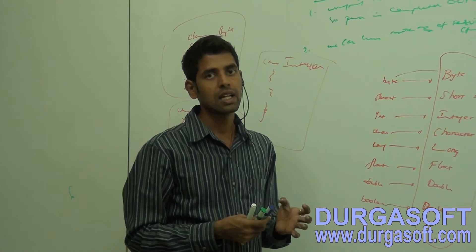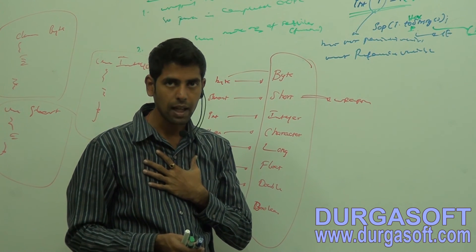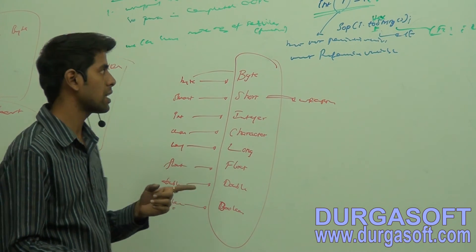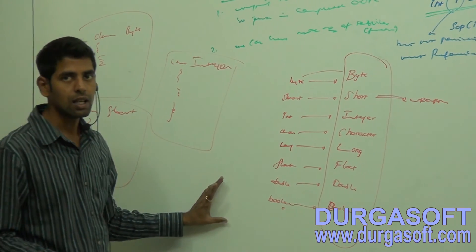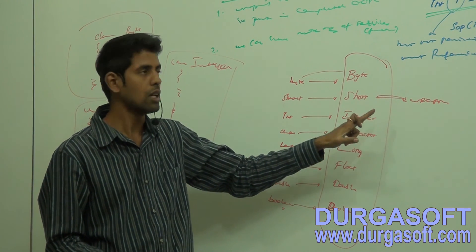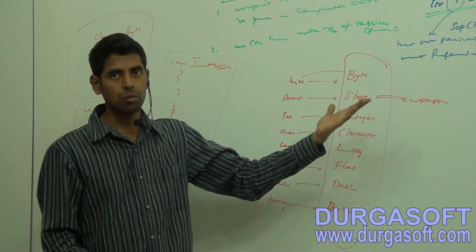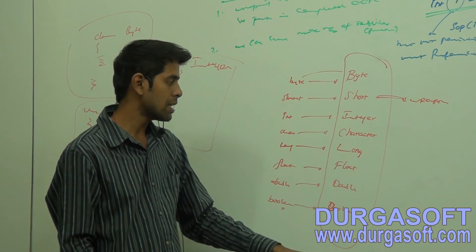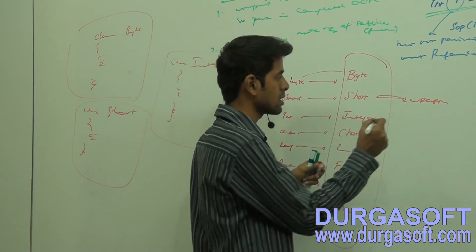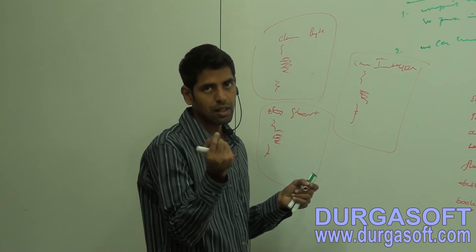To provide functionalities for literals, we can develop our own class with some methods or services, but by default the JDK - Sun Microsystem - has provided classes for corresponding data types: Byte for byte, Short for short, Integer for int, Character for char, Float for float, Double for double, Boolean for boolean. All these classes are called wrapper classes and they have lots of implementations.